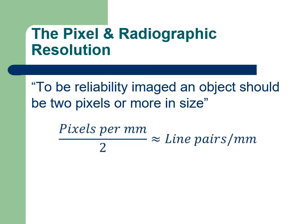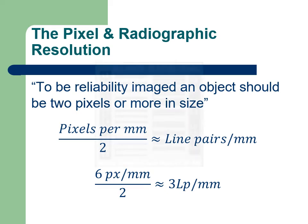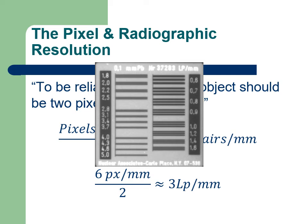So, if one takes the pixels per millimeter specification and divides that number by two, the answer will be what one would expect to resolve in line pairs per millimeter. If a plate specifies a resolution of six pixels per millimeter, the expected resolution would be about three line pairs per millimeter. Here is an example of a resolution grid radiograph, and at six lines per millimeter, we would expect to see in the range of 2.8 to 3.1 line pairs per millimeter.